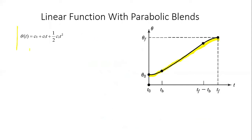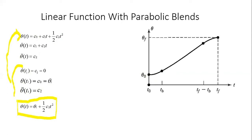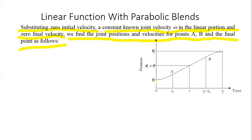This linear function with parabolic blend can be described by a position equation. Taking the first-order derivative gives θ̇(t) = c₁ + c₂·t, and θ̈(t) = c₂. Initially, at t = 0, velocity is zero so c₁ = 0, and the position is θ_i so we get θ(t) = θ_i + ½·c₂·t². Therefore θ̇(t) = c₂·t and θ̈(t) = c₂.